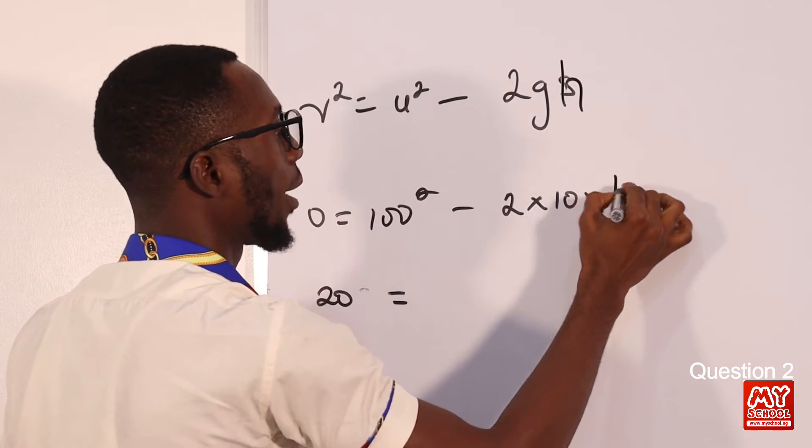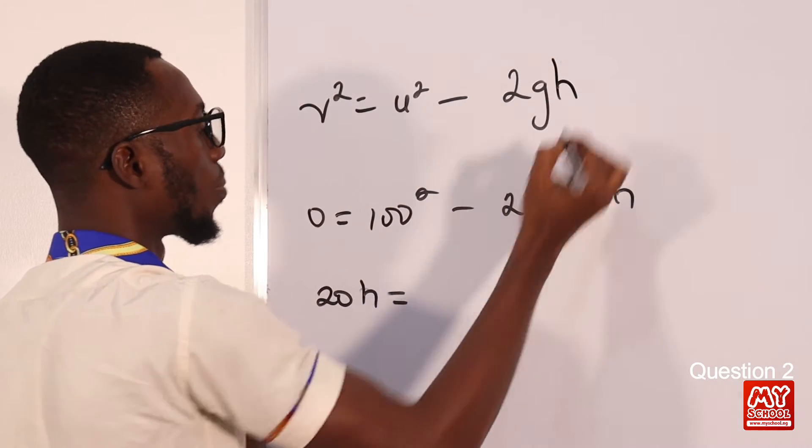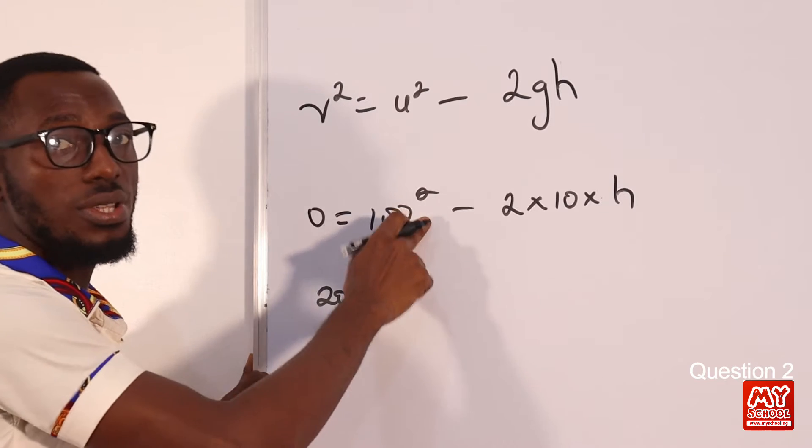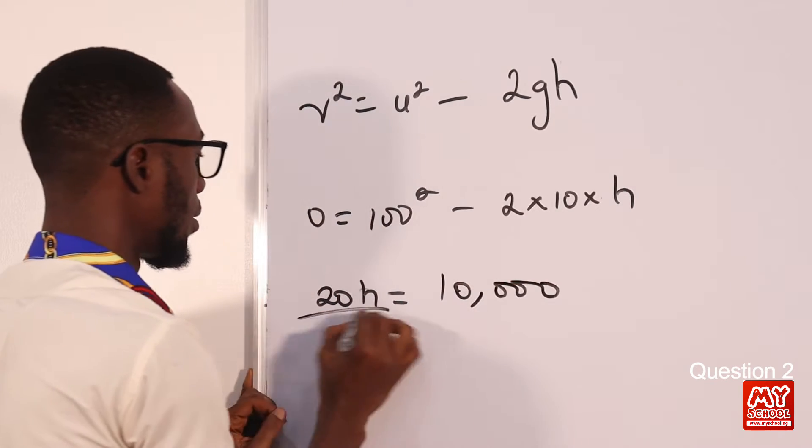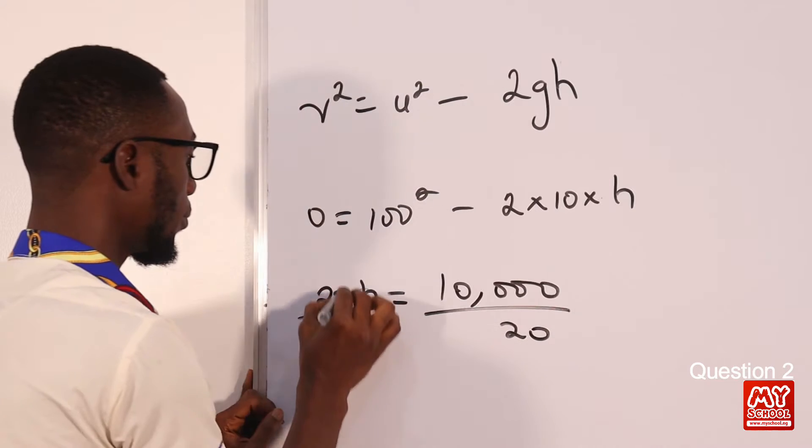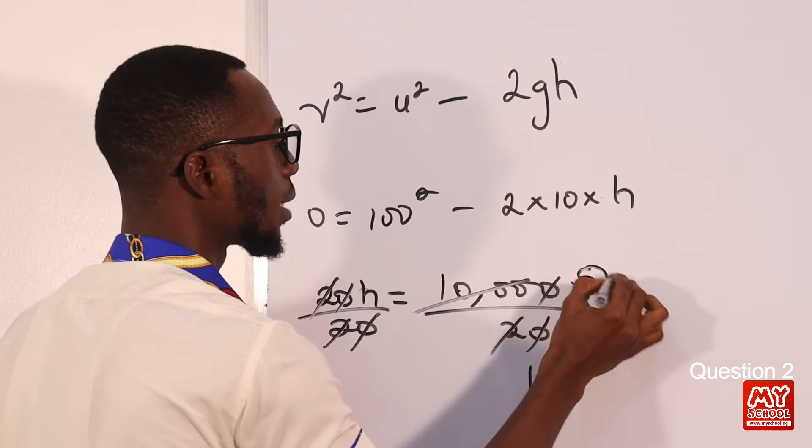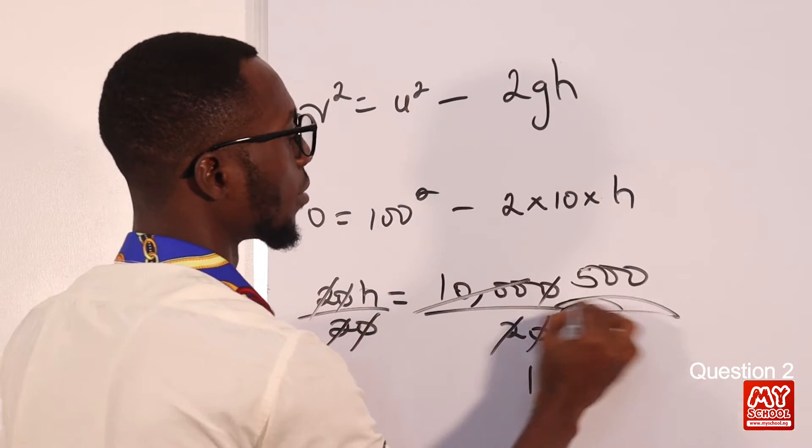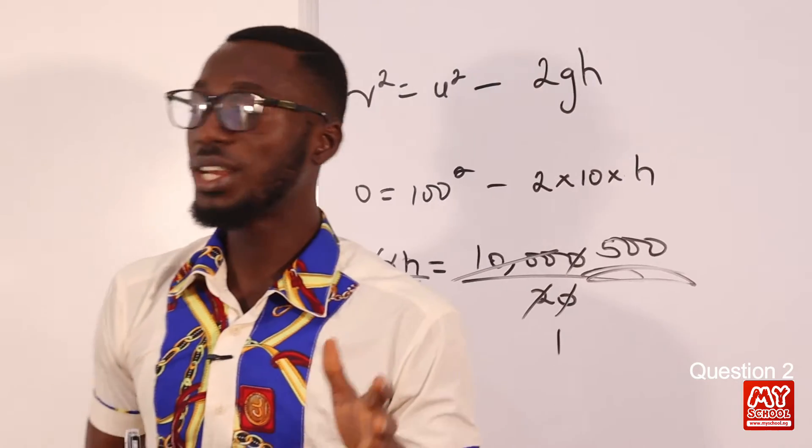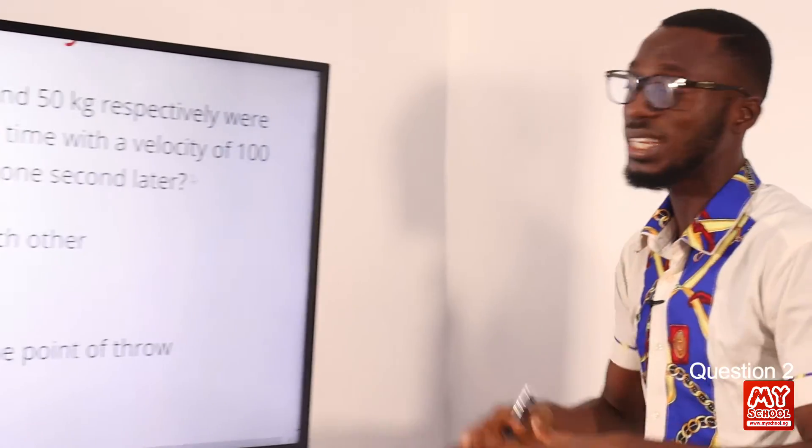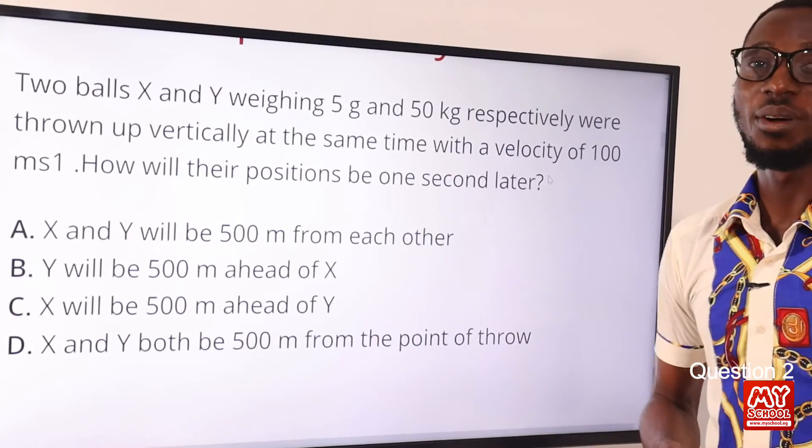We have H, the vertical distance. Because 100 raised to power 2 is 100 times 100, and that makes 10,000. Dividing both sides by 20, so 2 in 1,000, that is 500. So 500 meters for both bodies. Remember the relationship when it comes to gravitational field and masses, especially at the same locality. So we have option D. Option D is the correct option.